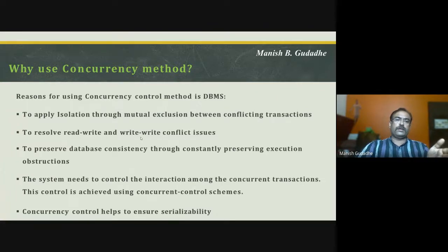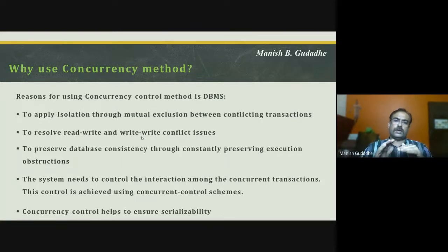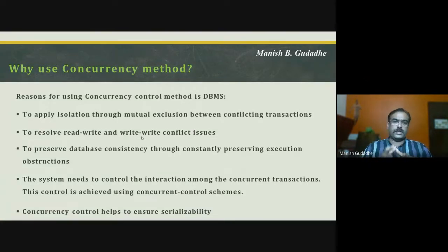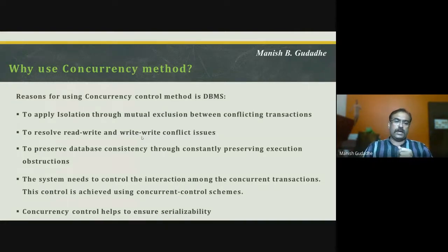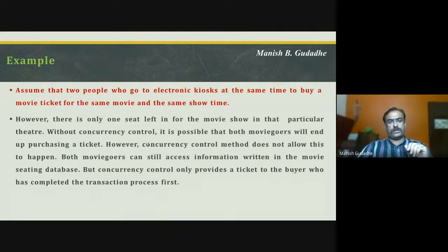We use concurrency methods for several purposes: to apply isolation through mutual exclusion between conflicting transactions, to resolve read-write conflict or write-write conflict issues, to preserve database consistency by controlling interactions between concurrent transactions, and to ensure serializability. These are the formal reasons for which we design concurrency control platforms.